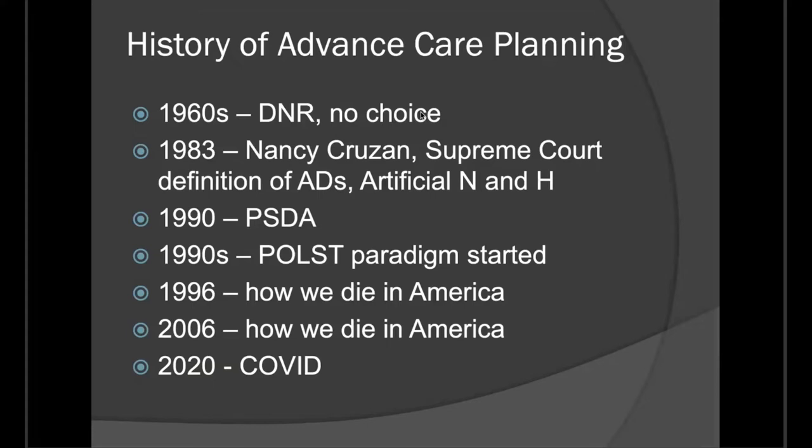Unfortunately, in 1996 when there was a study done about how we died in America, even with the Patient Self-Determination Act we were not getting advanced directives — patients were dying in ways they didn't want to. We repeated that study in 2006 and found very similar results. So we started to look at what it really means to have an advanced directive, whether it's the gold standard, or whether it's more about conversation. And now of course we have COVID, which has really gone into high gear in terms of what we should be looking at.